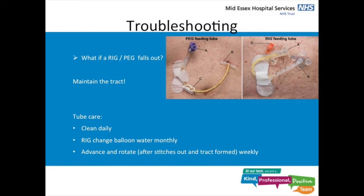If a PEG or RIG falls out, the most important thing is maintaining the tract. If the patient is at home, they need to go to A&E straight away — there are only a few hours before the hole closes up and a new one must be reinserted as soon as possible. If they're an inpatient, ring endoscopy or radiology depending on the type of insertion. For tube care: tubes need to be cleaned daily, RIGs need monthly balloon water changes, and they need to be advanced and rotated weekly after the stitches are out.